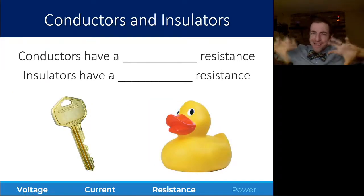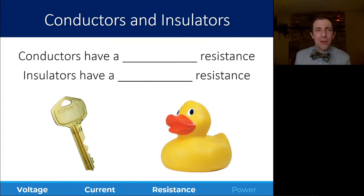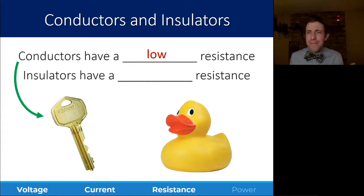One big overarching category when we talk about resistance is defining things as conductors or insulators. And it isn't really a hard line to say that this is a conductor or this is an insulator. There's not just two categories. It's a spectrum. So some things are better conductors than others. But overall, we say that a conductor is something that has a low resistance.